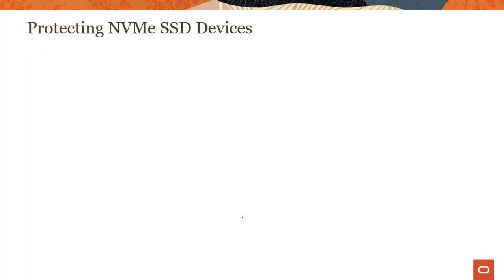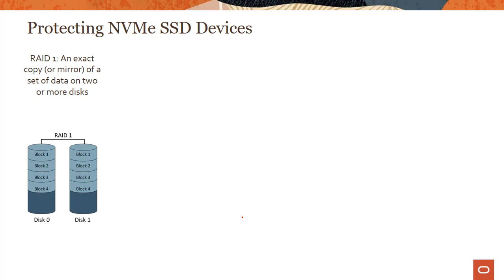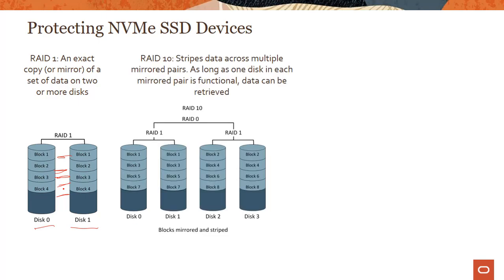Since these devices are not protected by OCI out of the box, you need to configure RAID yourself. There are various options — here are three. RAID 1 is simply a mirror, copying the same data across two or more disks (disk 0 and disk 1). The disadvantage is there is no parity — parity being a calculated value used to reconstruct data after a failure — so if both disks fail, there is no redundancy built in. RAID 10 stripes data across multiple mirrored pairs.